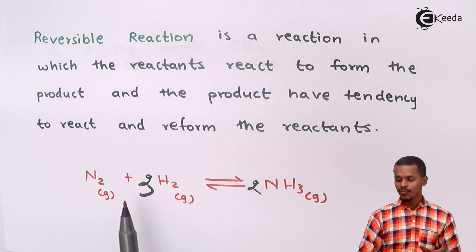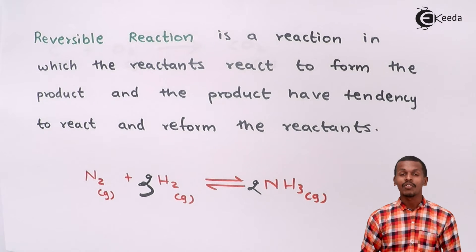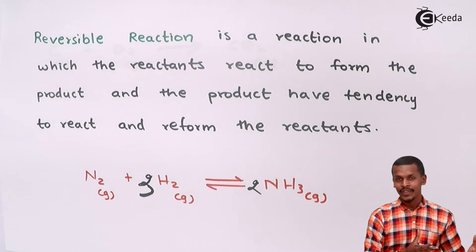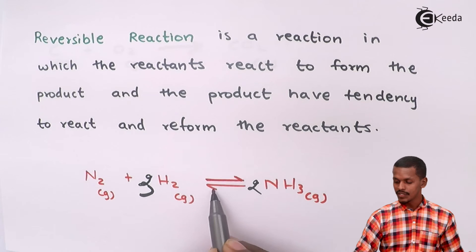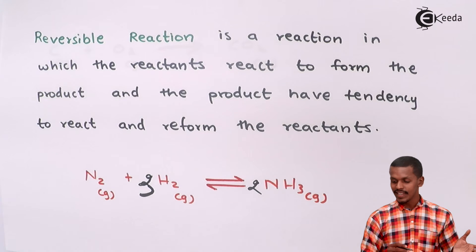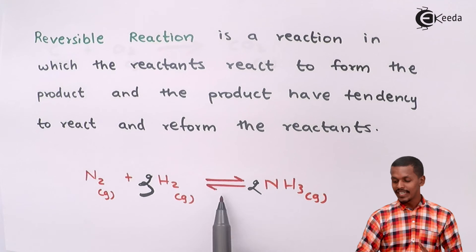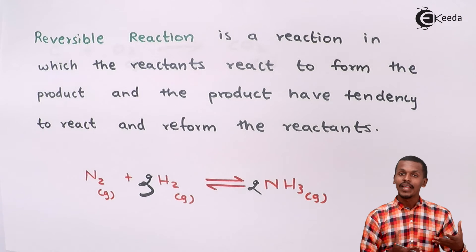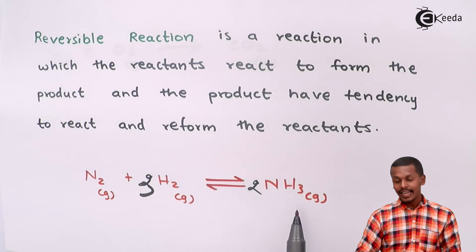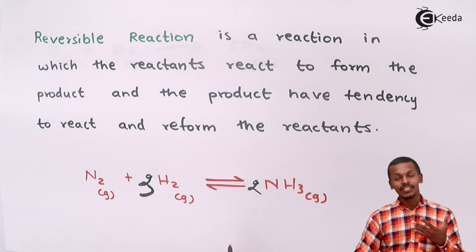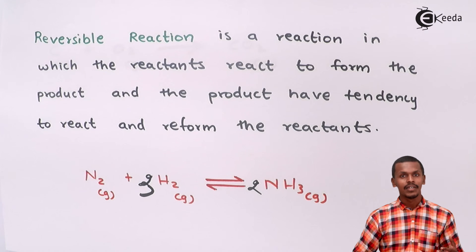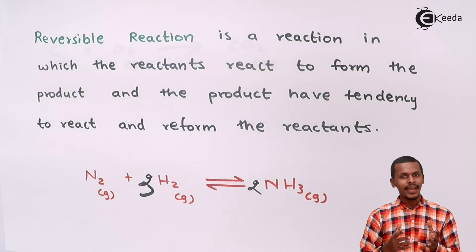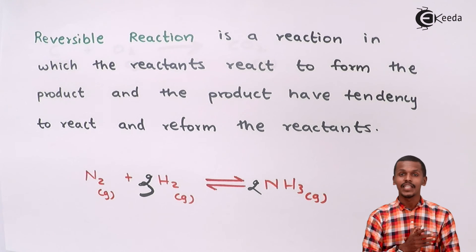Once the reactants have reacted to form NH₃, that is ammonia, this product has a tendency to reform the reactants again. That is why we represent it with double arrows — the upper arrow indicates the reaction is moving forward, while the lower arrow indicates the reaction can also move backward. So the reactants are converted into product, and at the same time the product can convert back into reactants. This simultaneous forward and backward reaction is what makes it a reversible reaction.